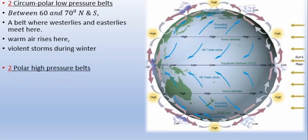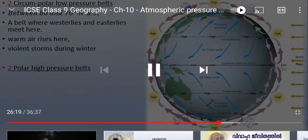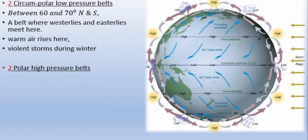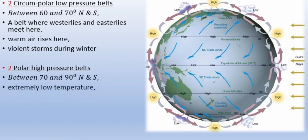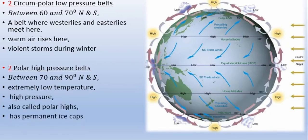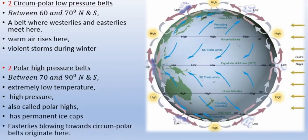The fourth belt is the polar high pressure belt. According to the textbook, it is located at 70 to 90 degrees north and south. Extremely low temperature causes high pressure in this region, also called polar high pressure belts. These regions have permanent ice caps and are always covered by ice, with easterly winds blowing.